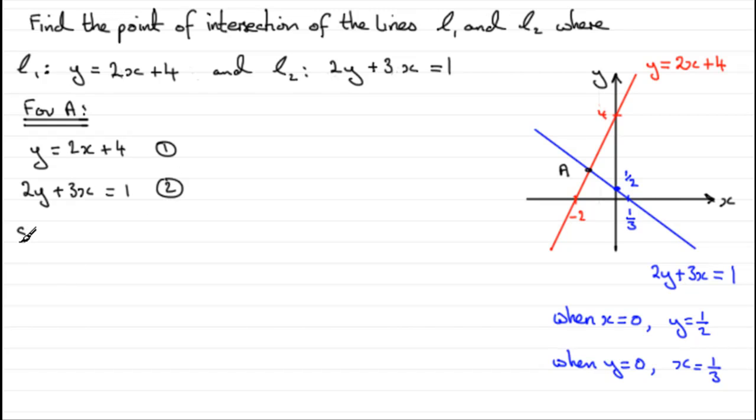So if I do that, let's just put a note here: sub 1 into 2. Then we're going to therefore have 2 times whatever y is, which is 2x plus 4, and then we've got plus the 3x, and it equals that one.